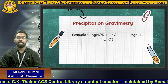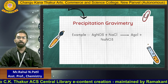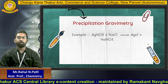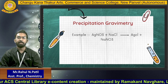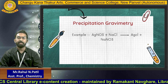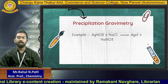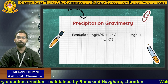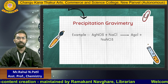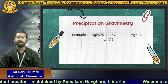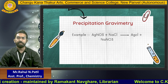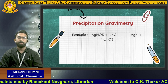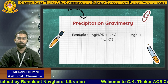For example, when silver nitrate (AgNO3) reacts with sodium chloride (NaCl), we get silver chloride (AgCl) plus sodium nitrate (NaNO3). AgCl, that is silver chloride, is obtained in precipitation form.